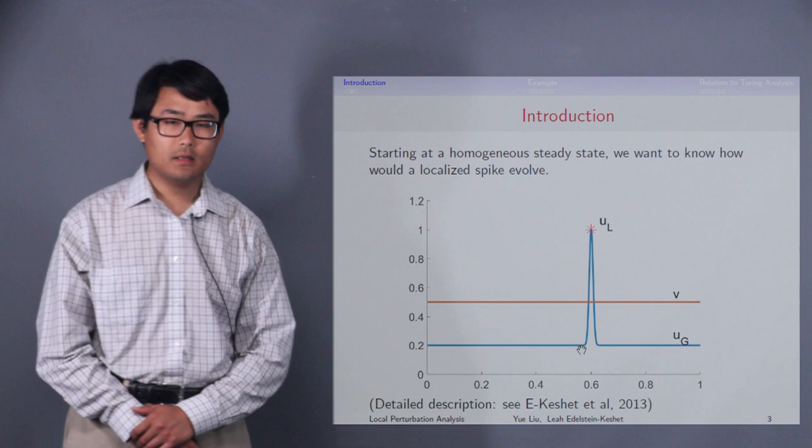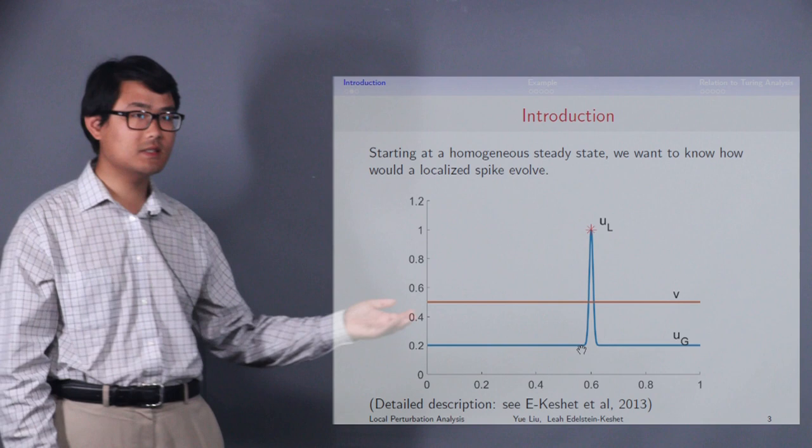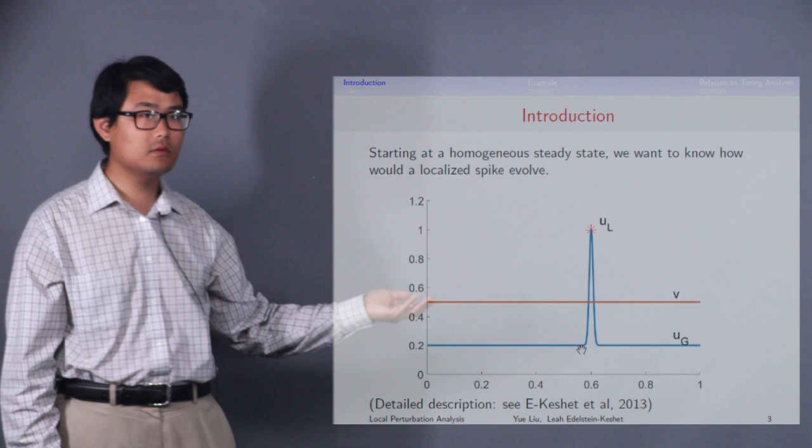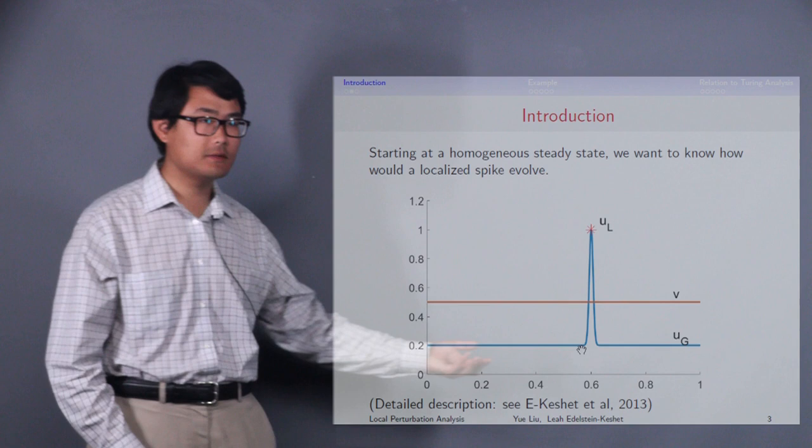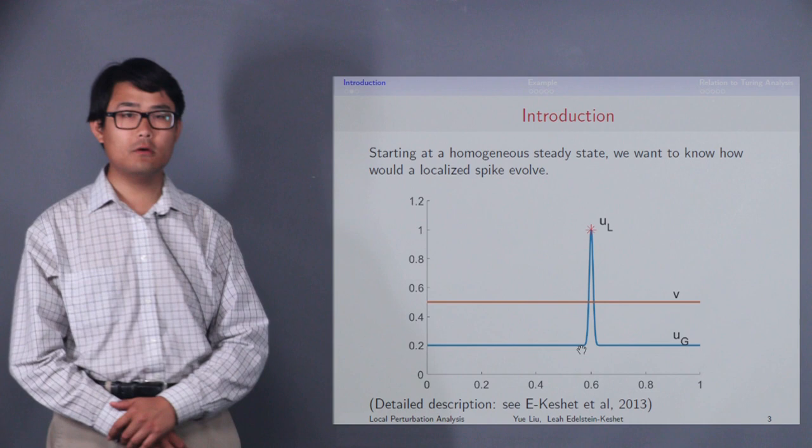Let us consider an initial condition where we start at a homogeneous steady state with v equal to a constant global value, and u equal to another constant global value, ug. We want to know what happens if we put in a localized spike like this. Our localized spike has height UL and is considered infinitesimally thin.